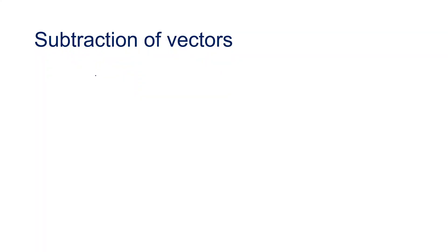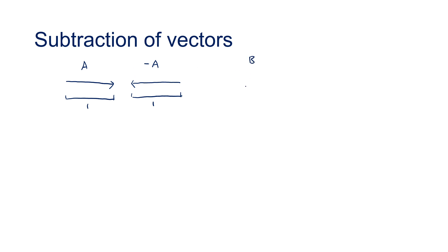So far we already talked about the sum of vectors but we have not yet mentioned the subtraction of vectors and how to handle the negative vector. Consider we have vector a with one unit of length. The negative a would point in the same direction and have the same length — but actually, negative a means pointing towards the opposite direction of the original one.